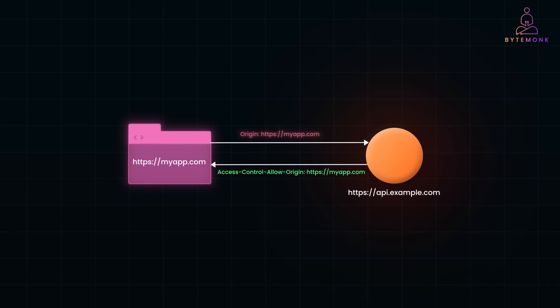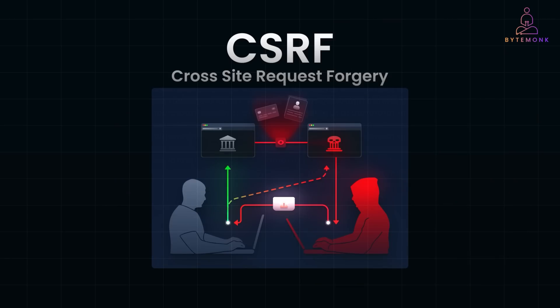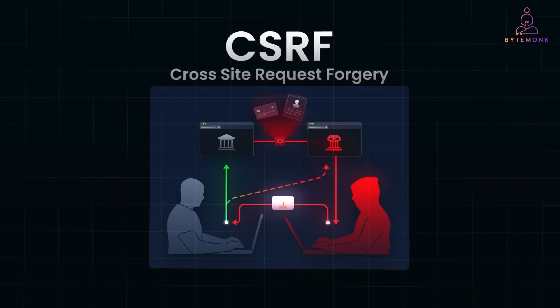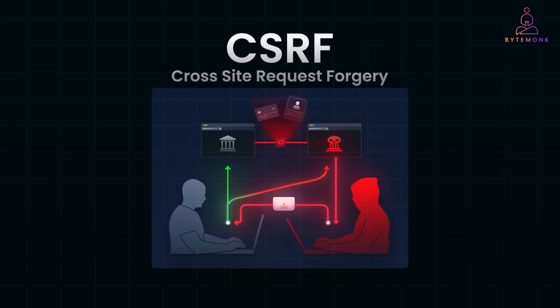CORS is not the same as CSRF, or Cross-Site Request Forgery. CORS controls which websites are allowed to access your APIs. But CSRF is a different security issue where an attacker tricks an authenticated user into making unintended requests. For example, if you are logged into a banking site and a malicious website secretly submits a transaction request on your behalf, that's CSRF — and CORS won't protect you from it. I'll cover CSRF in detail in my next video, explaining how to prevent it using CSRF tokens and same-site cookies.